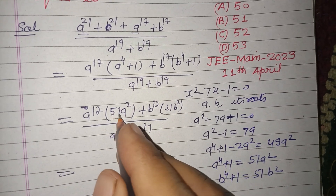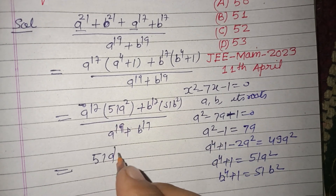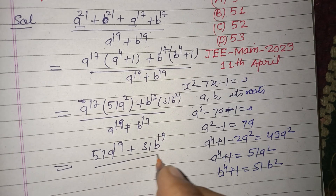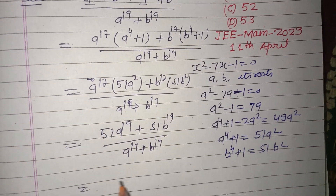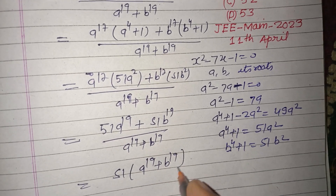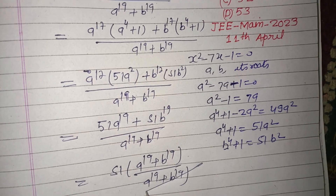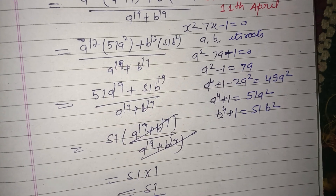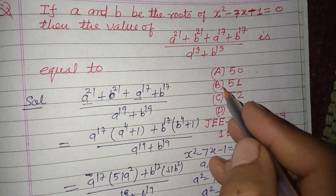51 is common in the numerator, and (a¹⁹ + b¹⁹) over (a¹⁹ + b¹⁹) equals 1. So 51 × 1 = 51. The value is 51, which corresponds to option B.